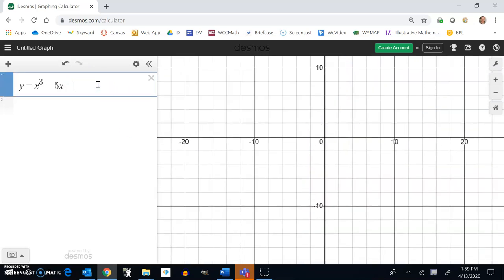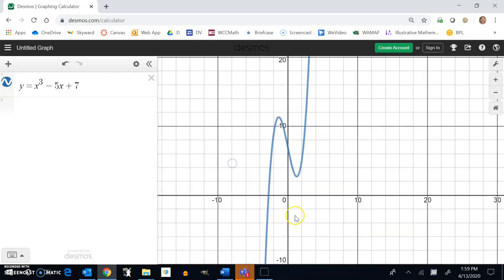So now, notice I have just one zero, exactly one zero, and I don't have any other intercepts. I actually do have additional zeros, which we'll talk about, but I only have one x-intercept.